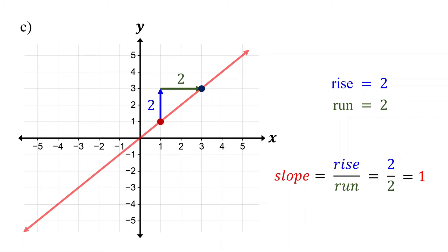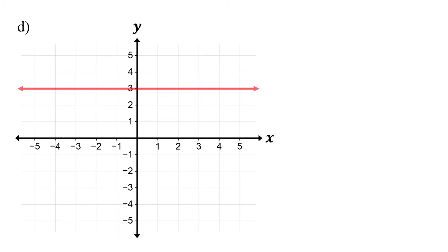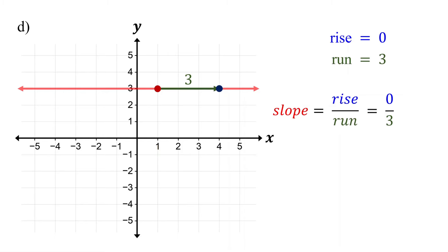Now, what about the slope of horizontal lines? Locate two points on the line. Notice that as we go from the left point to the right point, we don't move up or down at all, so the rise is zero. But we move to the right three units, so the run is three. Therefore, the slope is zero over three, which equals zero. A slope of zero means the line is horizontal. Remember, the slope of any horizontal line is zero.